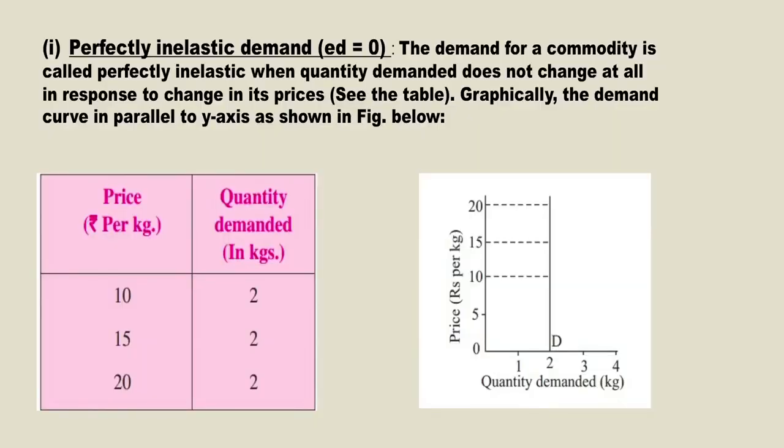First, perfectly inelastic demand. Perfectly inelastic demand means that the quantity demanded of the commodity does not change at all with changes in price. The price may increase or decrease, but the quantity demanded remains the same. The table shows that price per kilogram changes from 10 to 15 to 20, but the quantity demanded remains the same. The demand curve is a straight line parallel to the Y-axis, showing elasticity of demand is zero.